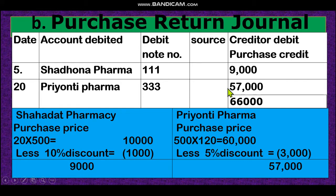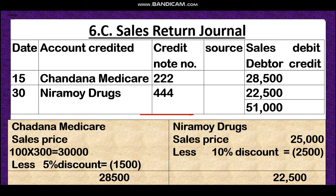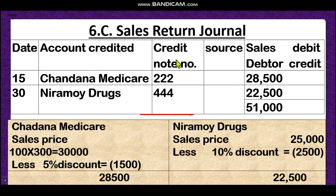Our next topic is sales return journal. The format is almost the same: date, account credited, credit note number, source, and the entry is sales return account debit and debtor account credit. If it is a sales journal, instead of account credited you write account debited, and the entry is debtor account debit and sales account credit — just the opposite. The calculation process and box format are also similar to purchase return.